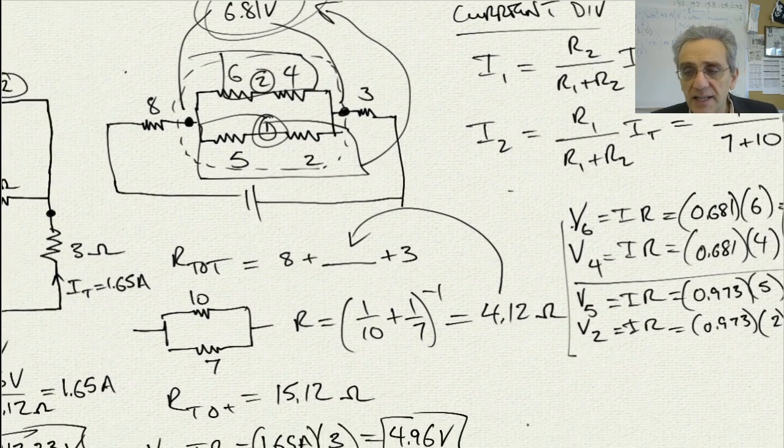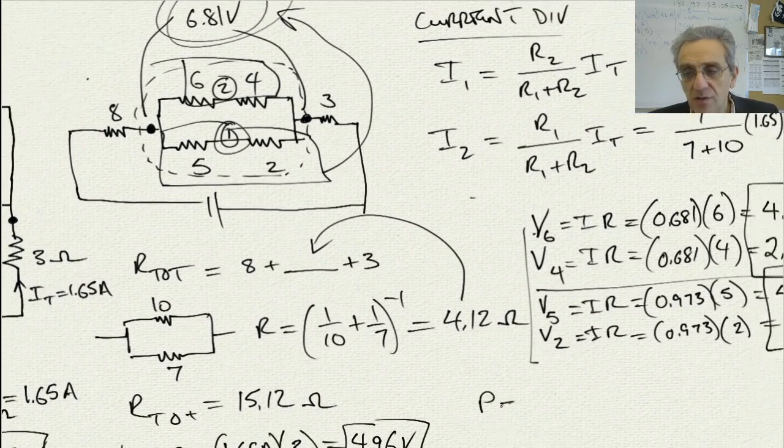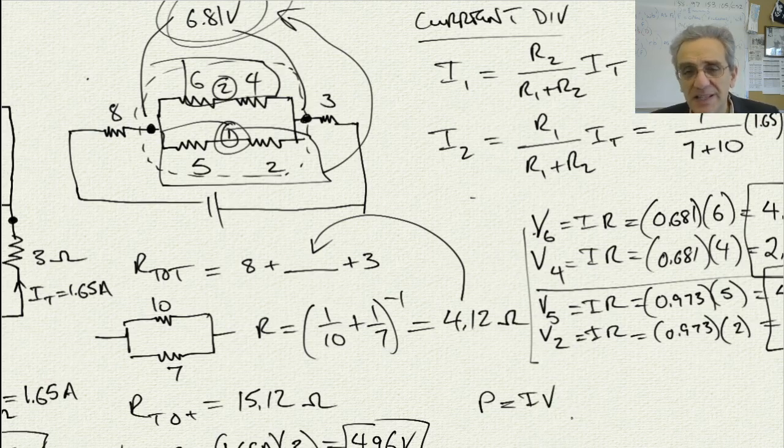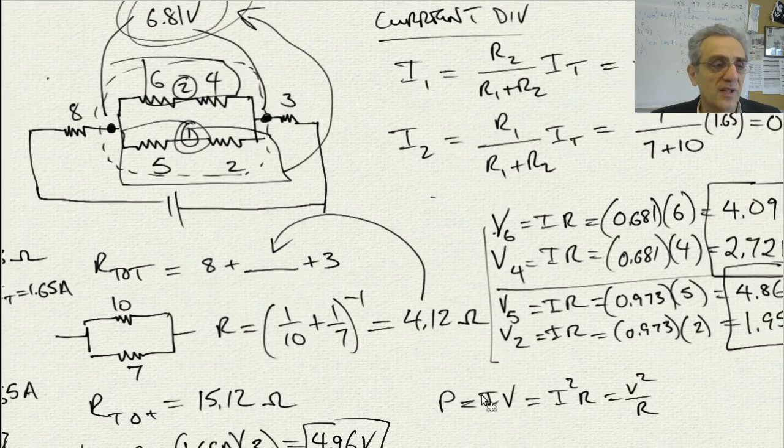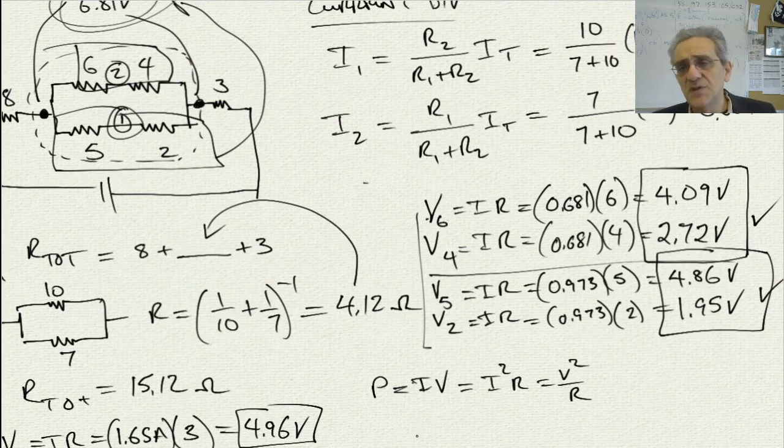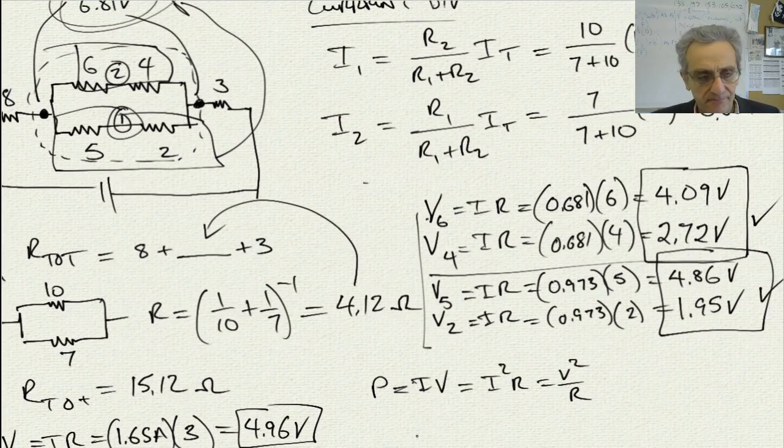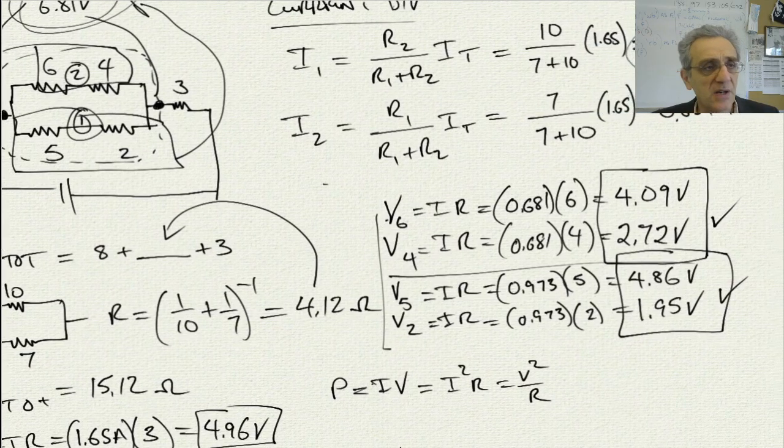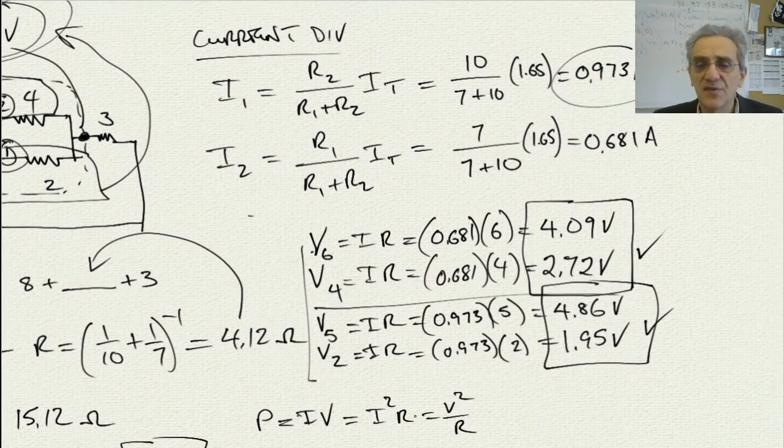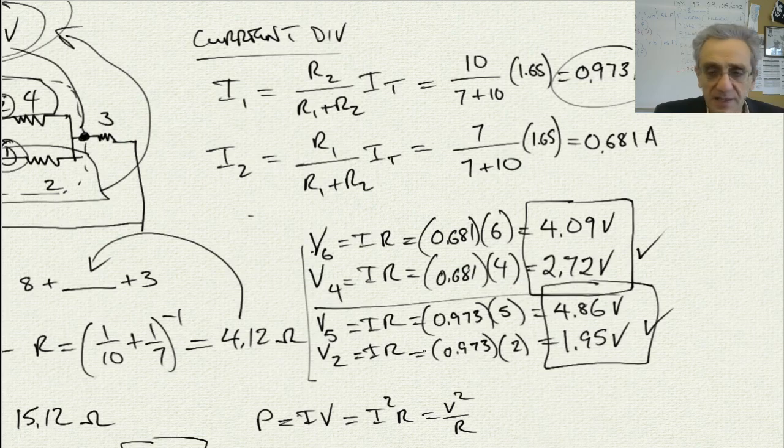Now, in order to calculate the power, if we wanted to, we could multiply I times V to get the power for any particular resistor. Or, alternatively, we could go I squared times R. Or, alternatively, we could go V squared over R. And we could solve it like that as well. But, at this point, we've solved the circuit. And I hope it's clear that there isn't just one way to do something. There's oftentimes many different ways to approach a problem. Alright, thanks for watching.